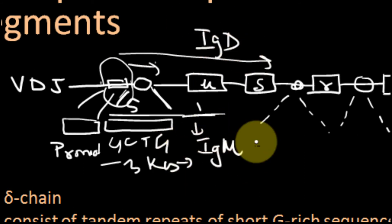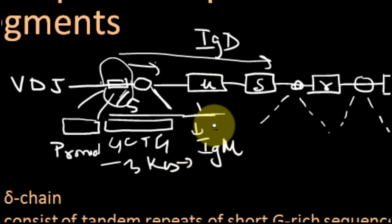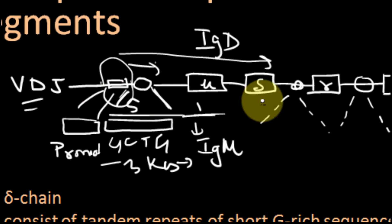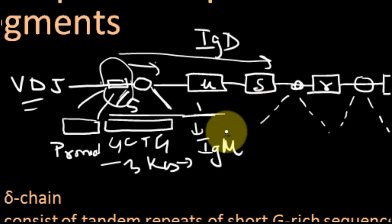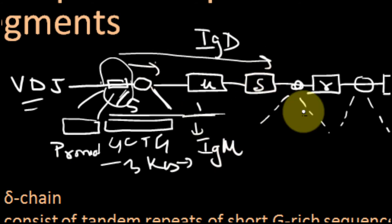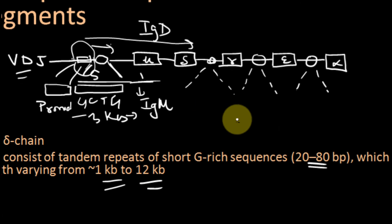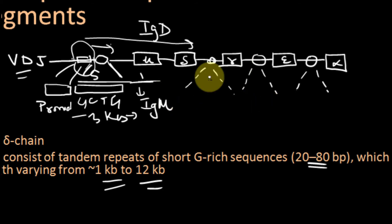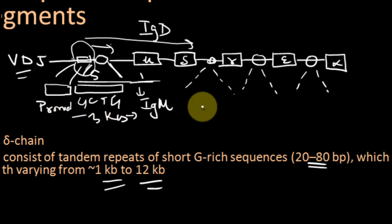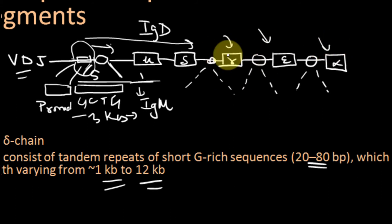That is the reason why naive mature B cells normally produce IgM and IgD antibodies on the surface by default — because they are present just downstream of the VDJ. So the first isotypes produced are IgM and IgD in all mature B cells by default. But when the antigen comes and binds to them, depending on which cytokine produces a signal, a specific class of antibody is switched on.